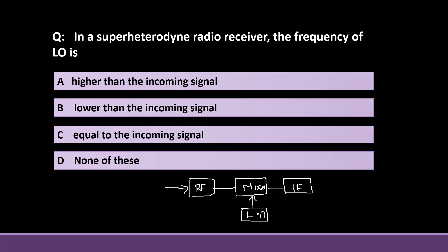I will talk about the frequency of the Local Oscillator. The frequency of the Local Oscillator is normally set — is it higher than the incoming signal, lower than the incoming signal, equal to the incoming signal, or none of these?